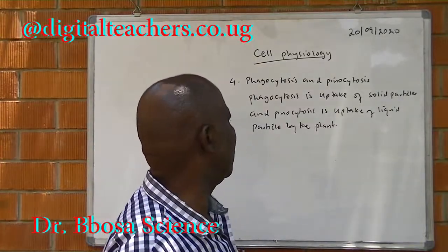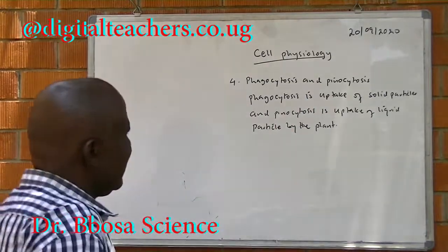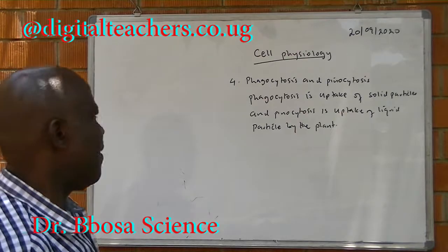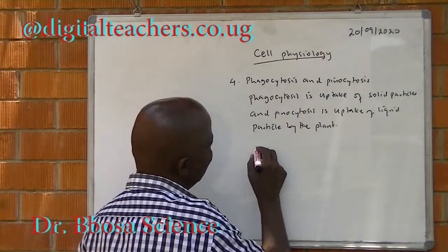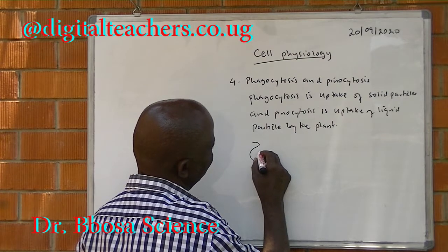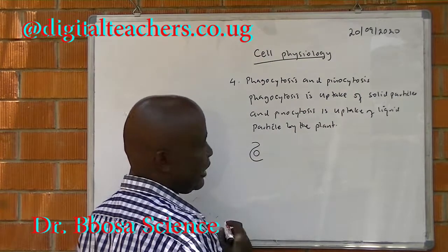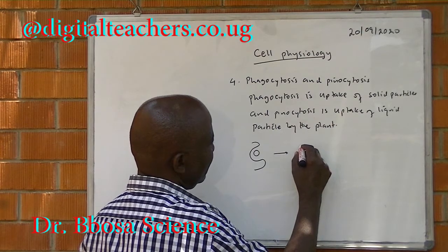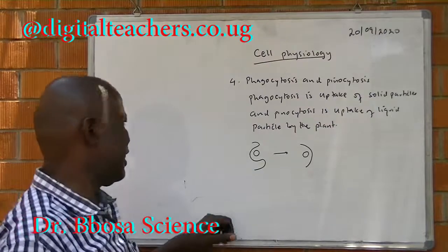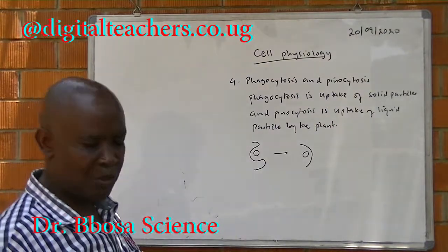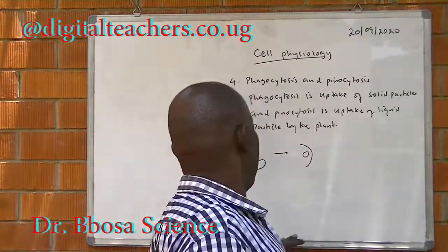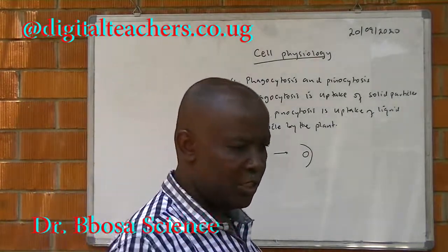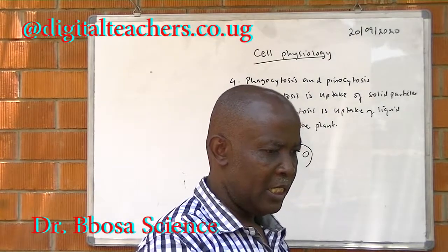Phagocytosis and pinocytosis. Phagocytosis is the uptake of solid particles, while pinocytosis is the uptake of liquid particles. In both processes, the plasma membrane invaginates and takes in the particle, then closes up with the particle inside. When the particle is solid, it is phagocytosis; when the particle is liquid, it is pinocytosis, but the process takes place in the same way.